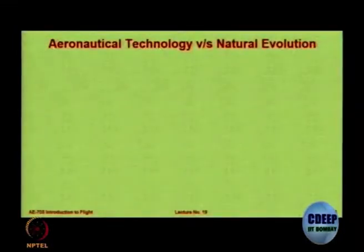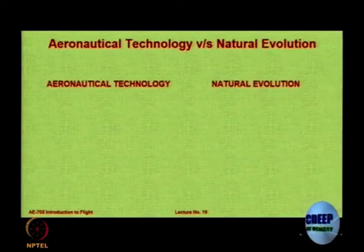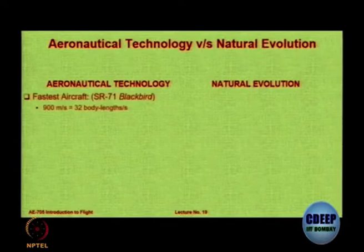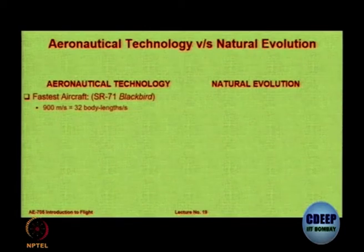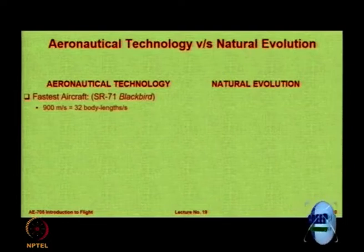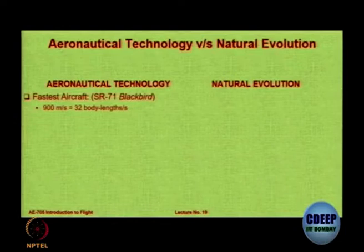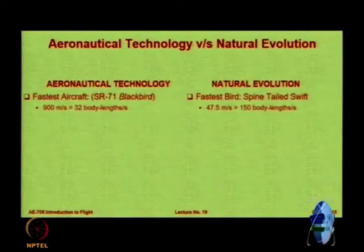First, it is very important for us to compare where we are as compared to where nature is. We will do a quick comparison between aeronautical technology and natural evolution. The fastest aircraft, as all of you know, is the SR-71 Blackbird which flies at 900 meters per second, but it travels only 32 times its body length per second. In comparison, the fastest bird is the spine-tailed swift, which travels at 49.5 meters per second — numerically smaller, but 150 times its own body length per second.